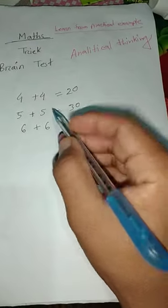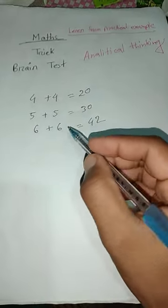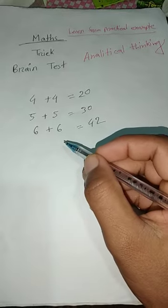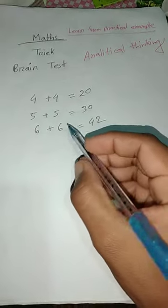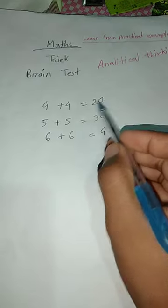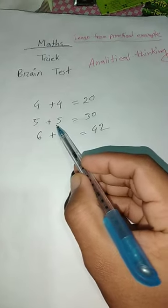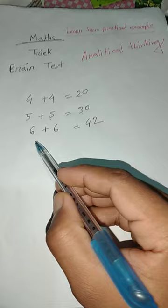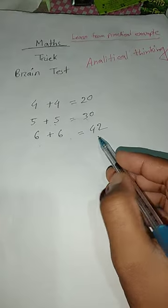Hello viewers, today we have a brain test in analytical thinking. If 4 plus 4 equals 20, if 5 plus 5 equals 30, if 6 plus 6 equals 42...